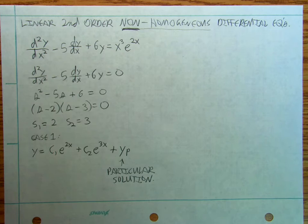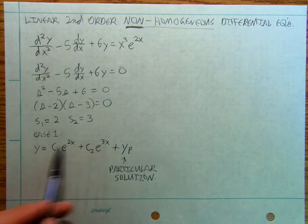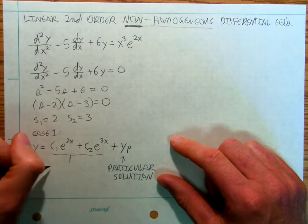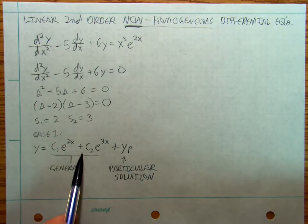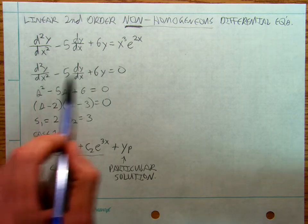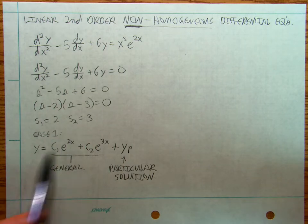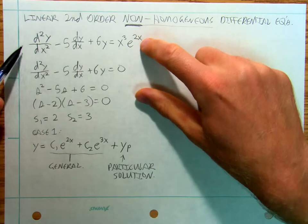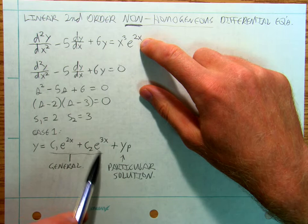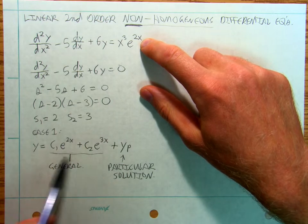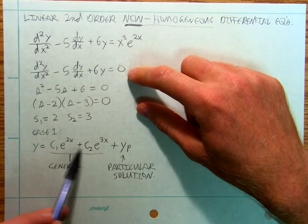If you think about it, this part — c₁e^(2x) + c₂e^(3x) — is the general solution to the homogeneous equation. Because it solves the equation equal to zero, when I tack on the particular solution yp, everything involving the homogeneous part is going to cancel out anyway. So those solutions need to be part of both, but they ultimately just cancel out.